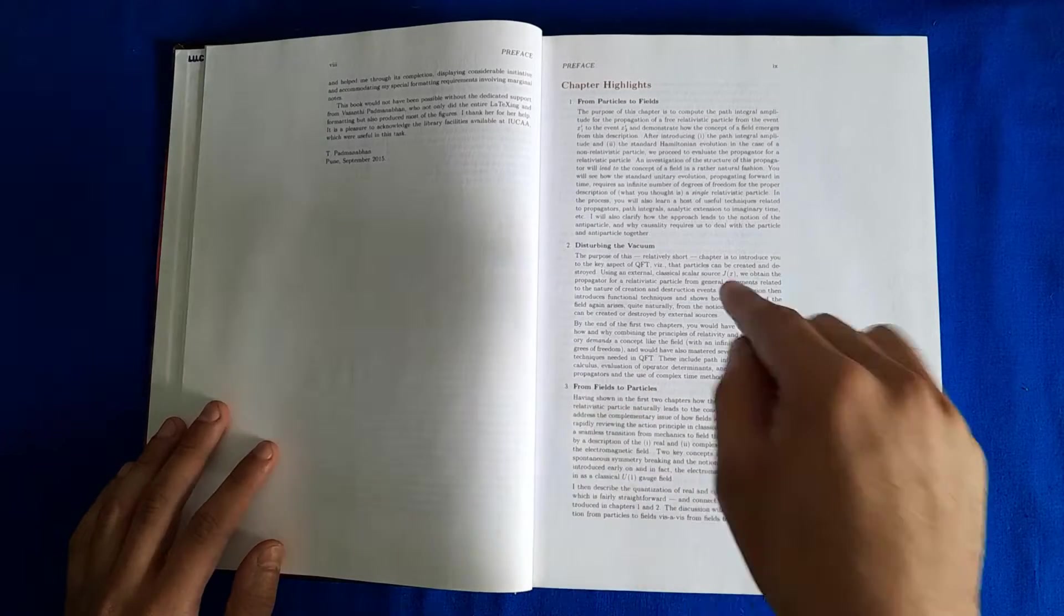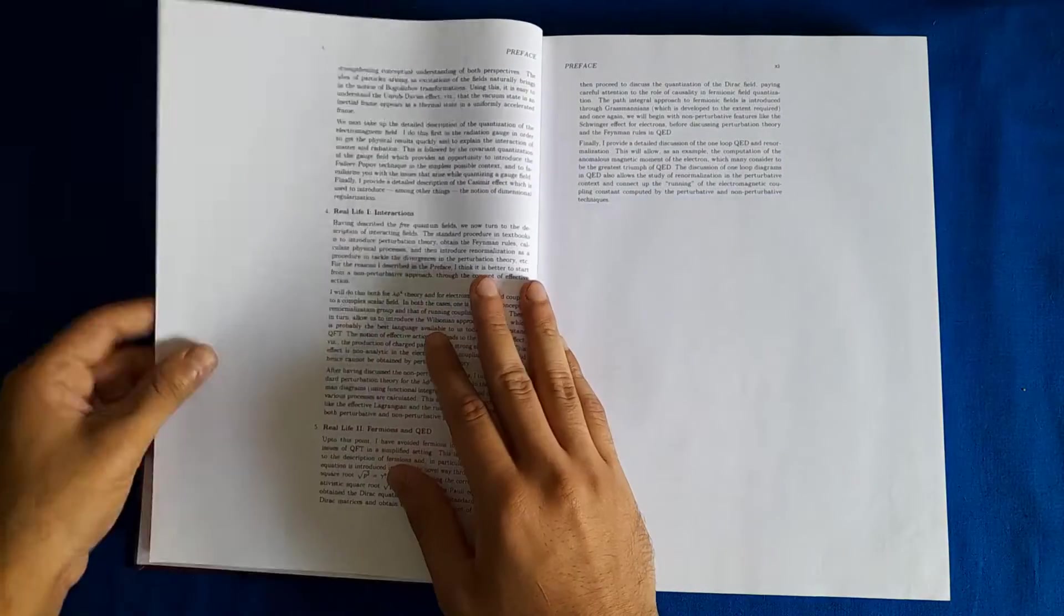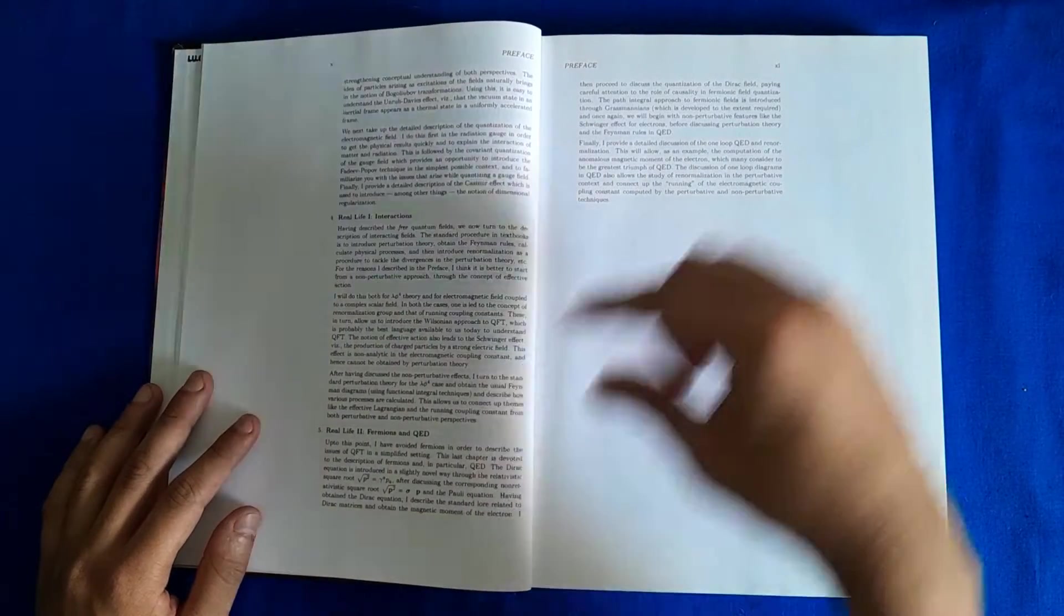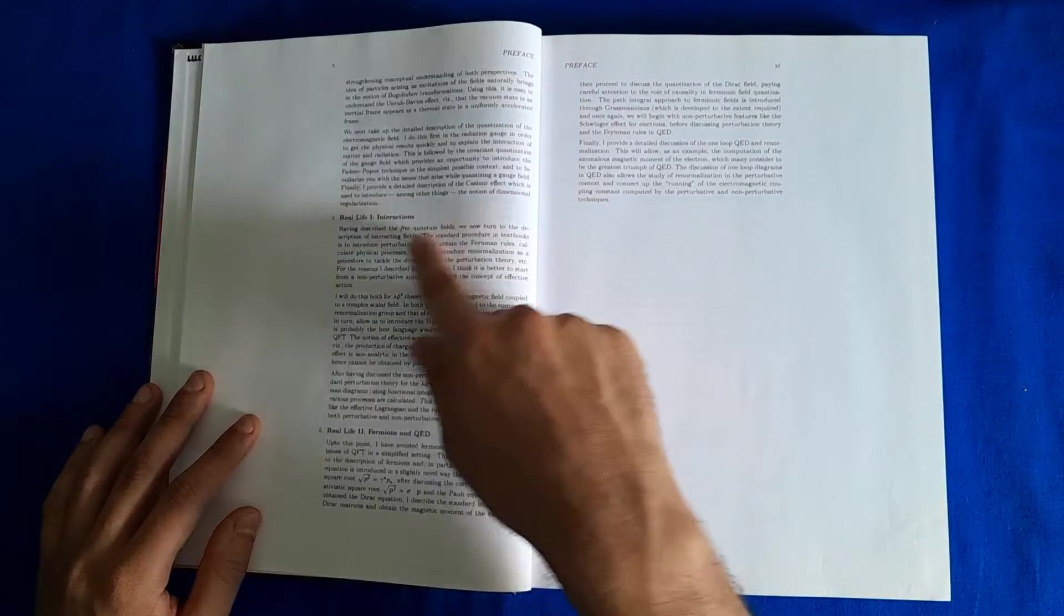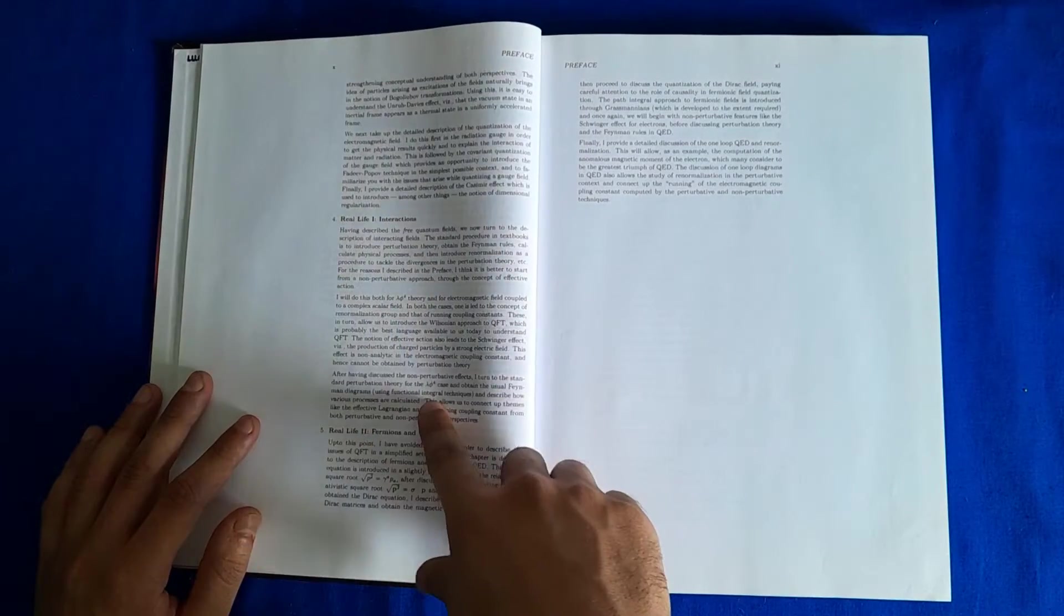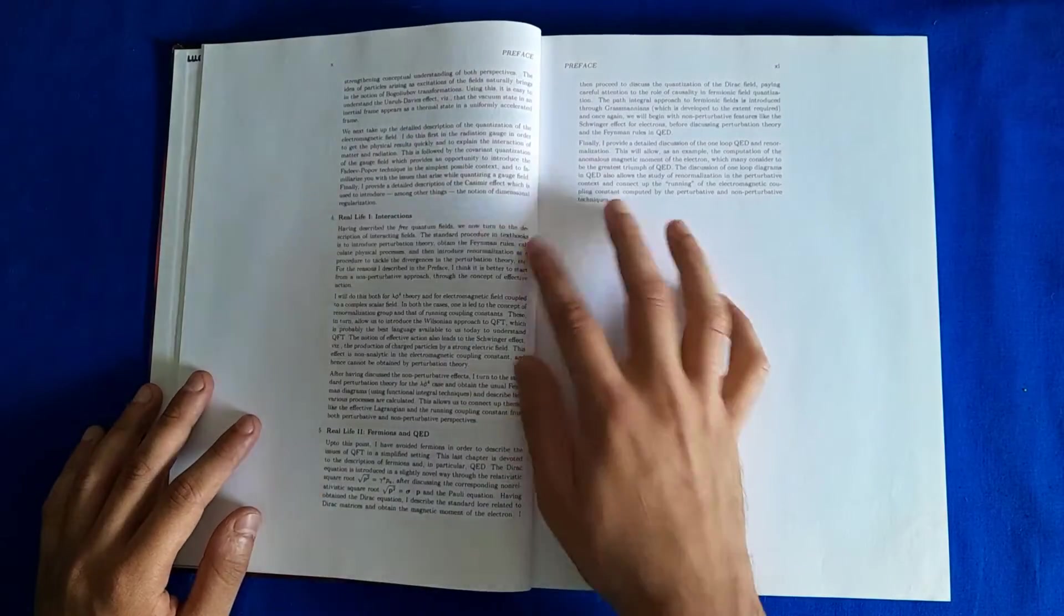Then going from fields and going back, now from fields to particles, how to quantize the given fields. And then the rest two parts are focused on interactions, so the first part is based on interactions for scalar fields, and the second is for Dirac or fermion fields.